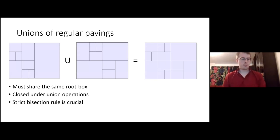We come to the most important algorithm of regular pavings. This is the union operation. It's a crucial algorithm. First, it's limited to regular pavings. They must share the same root box. It wouldn't make sense if they were different dimensions or different root boxes. Under only this assumption, regular pavings are closed under union operations. If you take the union of two regular pavings, you always get another regular paving. It is because of this strict bisection rule that this is true.